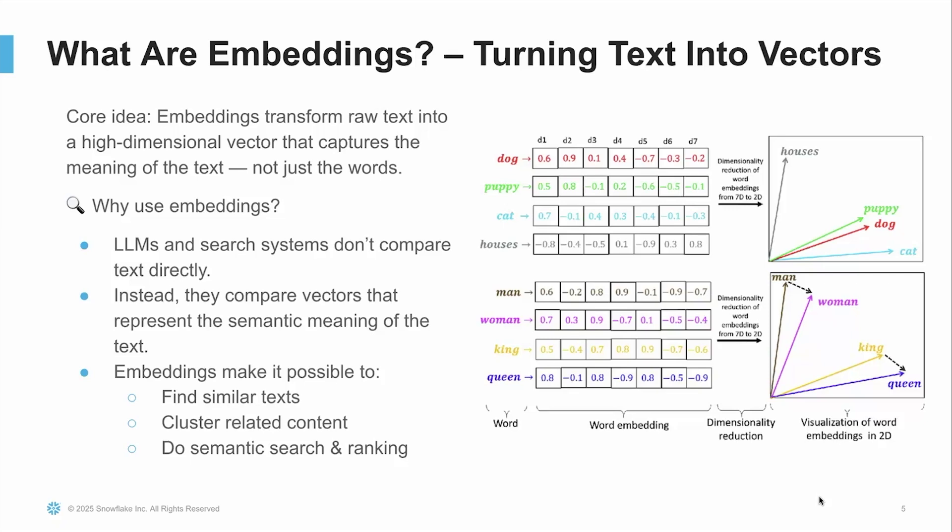So what are embeddings? The core idea is that embeddings transform raw text into a high-dimensional vector — a list of numbers that captures the meaning of the text, not just the exact words. LLMs and search systems don't actually compare pieces of text word for word. Instead, they convert that text into vectors, which are embeddings, and then compare the semantic similarity between those vectors. This is what allows us to find similar texts, cluster related content, and power semantic search and ranking — retrieving the most relevant information based on meaning, not just keywords.